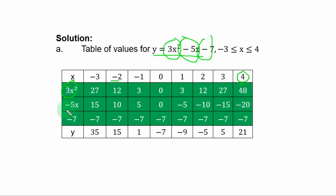To get minus 5s, you use minus 5 to multiply each value of s. Minus 5 times minus 3, you have 15. Minus 5 times 2, you have 10. And so on. Minus 7 is a constant, and as such, you write it under each value of s.